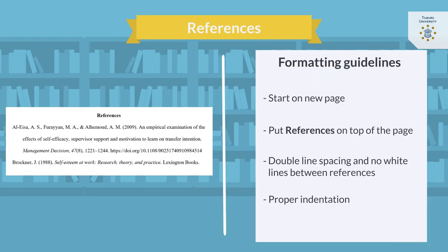Here you see an example of the start of a reference list. Please note that the indentation of the references is the other way round compared to how you indent for a paragraph. In the example, the first reference is for a journal article and the second one is for a book. As you can see, they are slightly different regarding the information they provide as well as the use of italics.